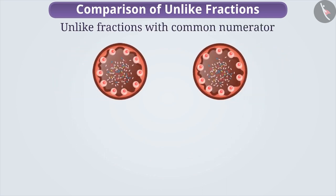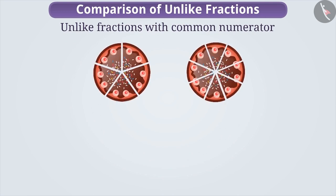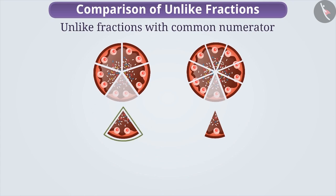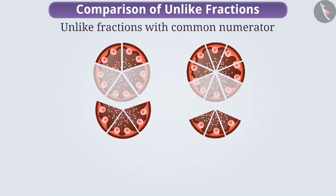Suppose we have taken two similar cakes. We made 5 equal pieces of one cake and 8 equal pieces of another cake. If we compare one piece of each cake, then we can say that the size of one piece of cake which is cut into 5 pieces is bigger than the size of one piece of cake which is cut into 8 parts. Since we can express these fractions as 1 by 5 and 1 by 8, we can say that the fraction 1 by 5 is greater than 1 by 8. Similarly, if we take three pieces from each cake, then the fraction will be 3 by 5 and 3 by 8. Here also, we can say that the fraction 3 by 5 is greater than 3 by 8.